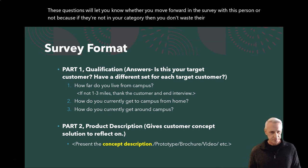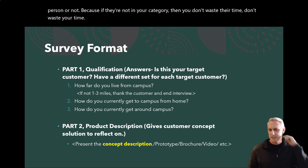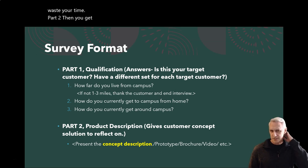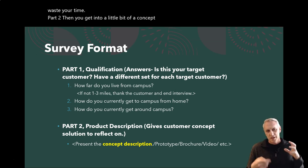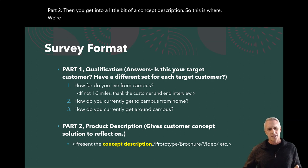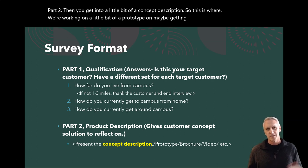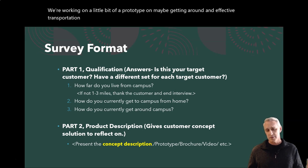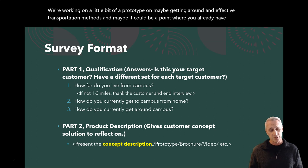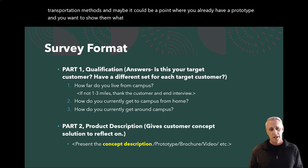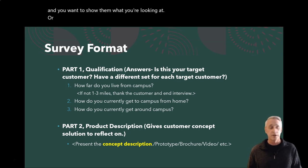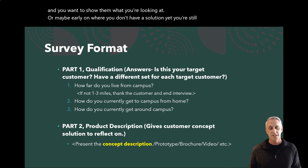If they're not in your category, then you don't waste their time and you don't waste your time. Part Two is then a concept description. We're working on a prototype around maybe effective transportation methods. It could be a point where you already have a prototype and you want to show them what you're looking at, or it may be early on where you don't have a solution yet and you're still identifying problems.